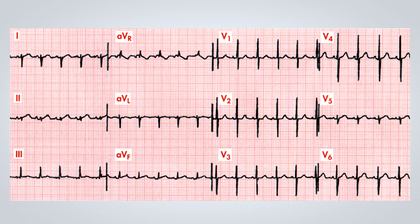Looking at the tracing, we can observe a sinus rhythm. The QRS complexes are quite narrow with an extremely short duration. The sinus rhythm is tachycardic. And if we examine the axis, we can see that it is deviated to the right. If we look at the T wave from V1 to V6, we can observe that the duration is extremely short. And in V1, it already starts with a large R wave, which usually doesn't happen.